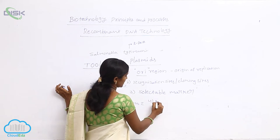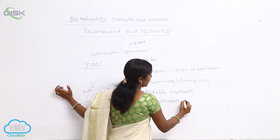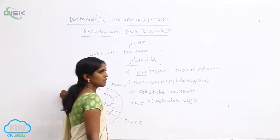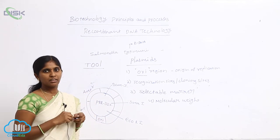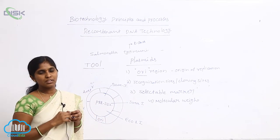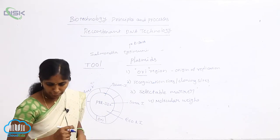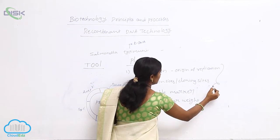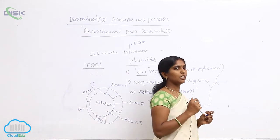Regarding molecular weight, it must have low molecular weight. Low molecular weight plasmids are very useful to penetrate into the host organism during transformation. These are the characteristics shown by plasmids. Coming to the types of plasmids, there are natural plasmids and derived plasmids.